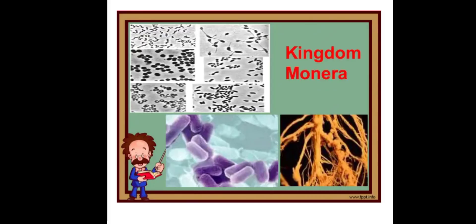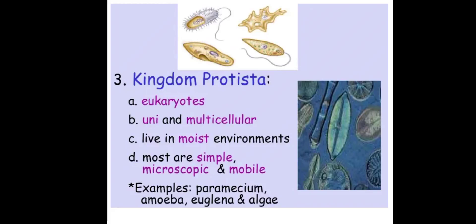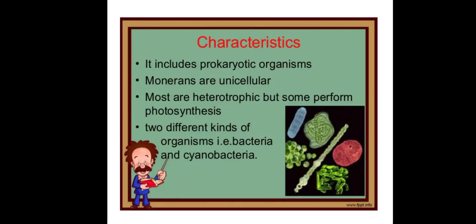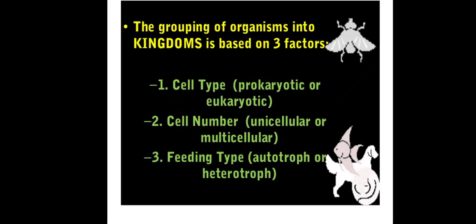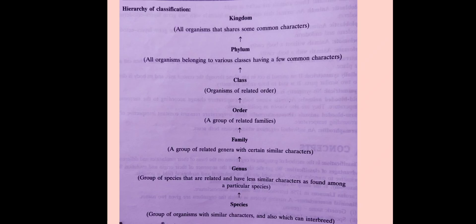Let us revise. Kingdom Monera: prokaryotic, unicellular, autotrophic or heterotrophic — two kinds are bacteria and cyanobacteria. Kingdom Protista: eukaryotes, unicellular, live in moist environments, most are simple, microscopic, and mobile — examples are Paramecium, Euglena, and algae. The hierarchy of classification is: Kingdom, Phylum, Class, Order, Family, Genus, and Species.